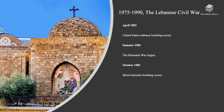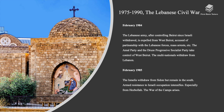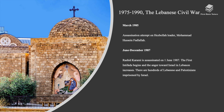In April 1983, the United States Embassy bombing occurred. During the summer of 1983, the Mountain War began, and in October 1983, the Beirut barracks bombing occurred. On February 1984, the Lebanese army, after controlling Beirut since the Israeli withdrawal, was expelled from West Beirut — accused of partisanship with the Lebanese Forces and mass arrest. The Amal Party and the Druze Progressive Socialist Party took control of West Beirut. The multinationals withdrew from Lebanon. On February 1985, the Israelis withdrew from Sidon but remained in the south. The armed resistance to Israeli occupation intensified, especially from Hezbollah. The War of the Camps arose. In March 1985, an assassination attempt was made on Hezbollah leader Mohammed Hussein Fadlallah.